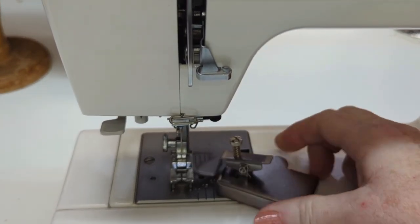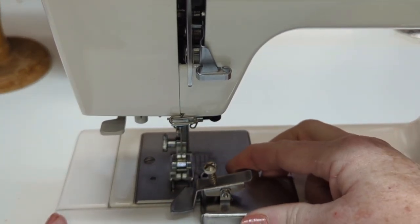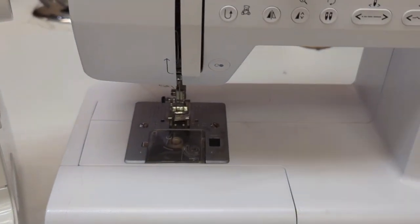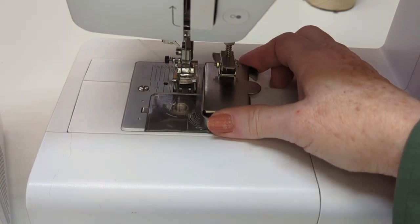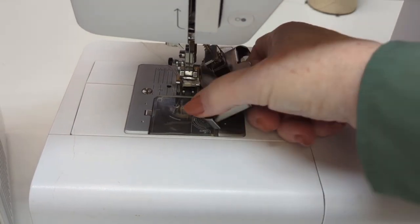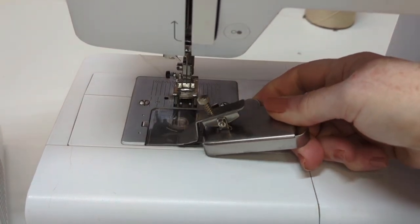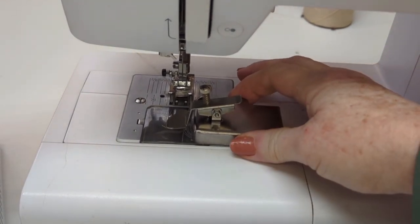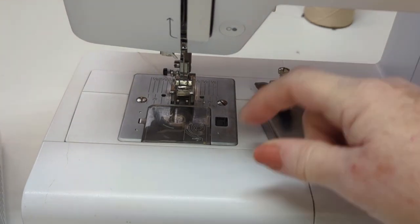And speaking of metal, these magnetic seam guides do require a metal presser plate in order to stick and stay stuck while you're sewing. So this machine, for example, has a generous amount of metal that extends in front of the foot, so that means you can use this magnet on this machine on both sides.